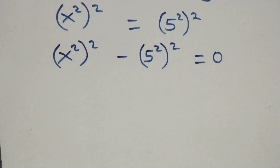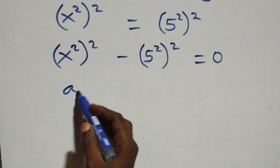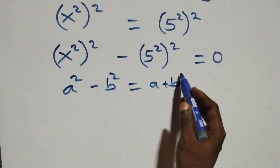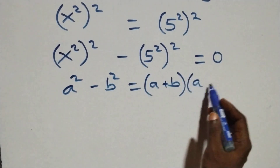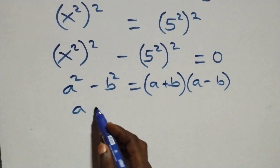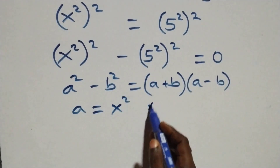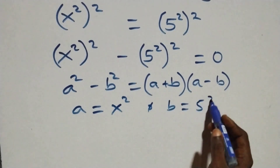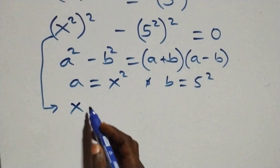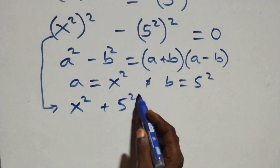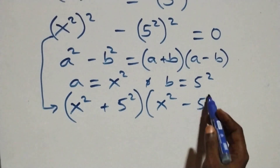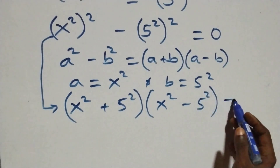This follows from the difference of two squares: a squared minus b squared equals (a plus b)(a minus b). Here a is standing as x squared and b is standing as 5 squared. So this becomes (x squared plus 5 squared)(x squared minus 5 squared) equals 0.